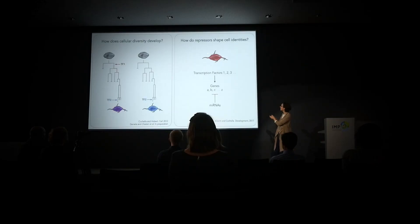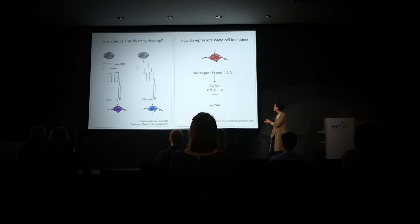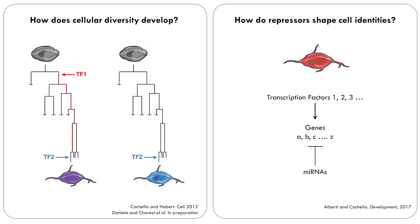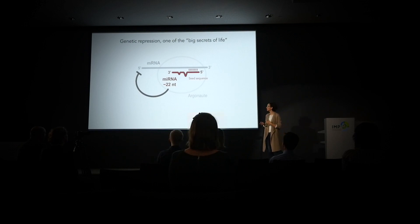We tend to think about a cellular identity as being defined by the set of genes that a cell expresses, under control of combinations of transcription factors. However, I want to discuss what is the contribution of repressors to selectively turning off or tuning down specific genes within a cell type, and how that can impact on the cell's identity and function. Jacques Monod called genetic repression one of the big secrets of life, because without repression it is impossible to generate spatial or temporal specificity in gene expression. We're particularly fascinated by a class of post-transcriptional repressors called microRNAs.